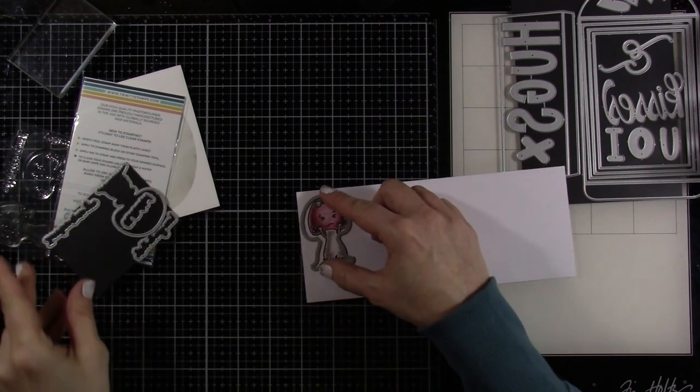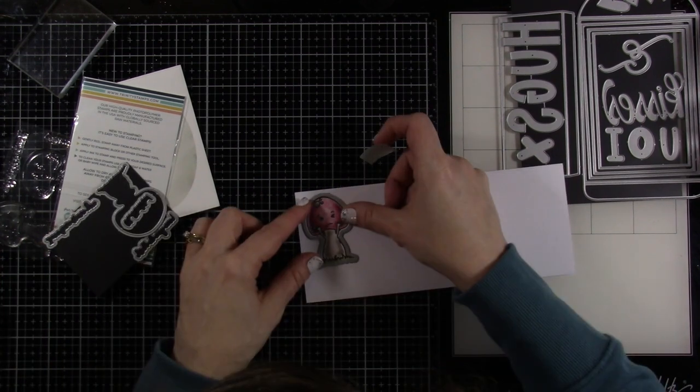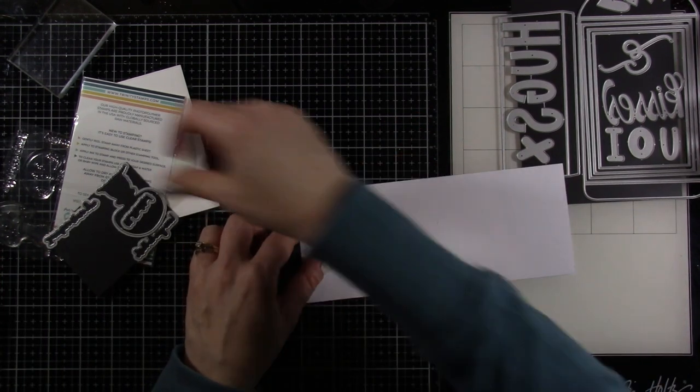And I like how that looks. So we're going to bring in the matching die, tack that down with a little bit of mint tape, and run that through our die-cutting machine. And then we need to stamp our sentiment.